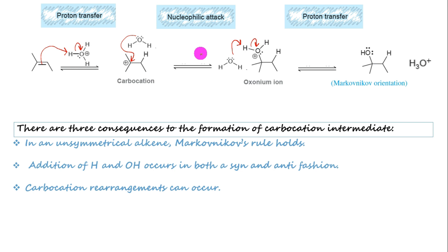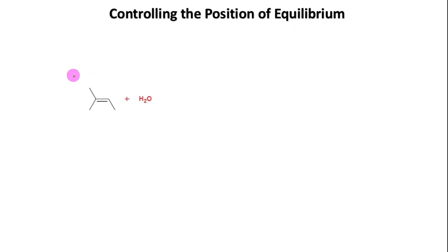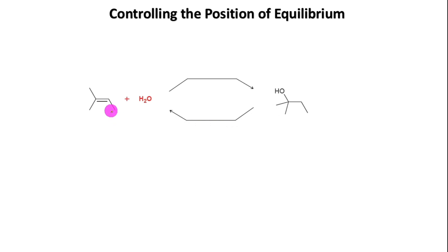If we carefully examine this mechanism we will see that double-headed arrows have been used rather than single-headed arrows. This means the reaction represents an equilibrium — it can go both in the forward and backward direction. Consider the reverse reaction: starting from alcohol and ending with alkene. This process is an elimination reaction in which an alcohol is converted into an alkene — more specifically, an E1 elimination, called acid-catalyzed dehydration.